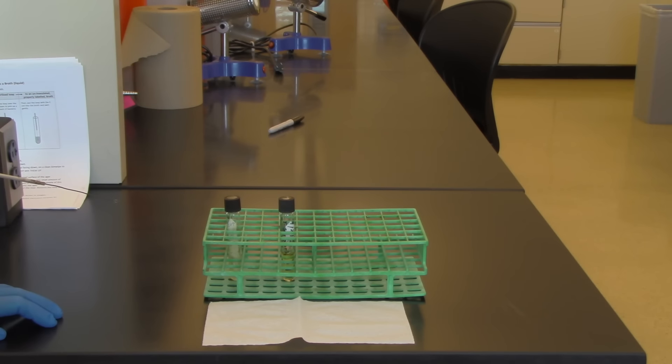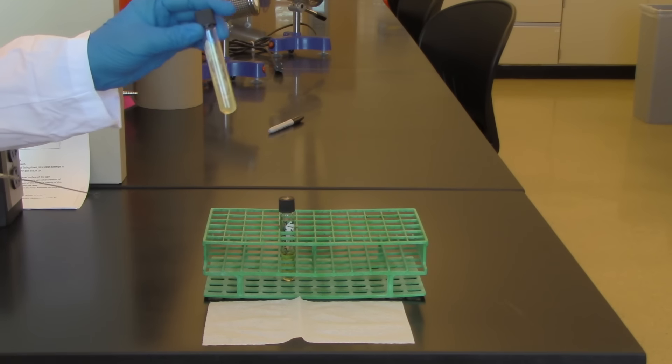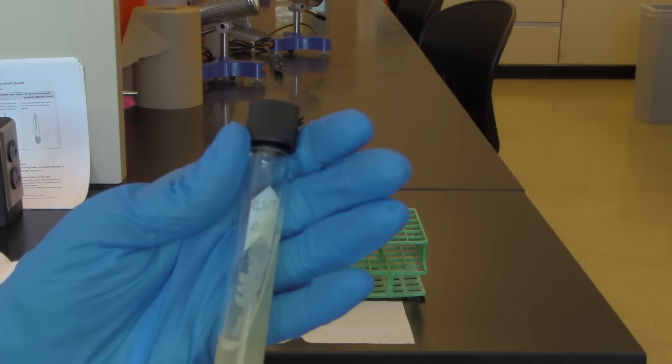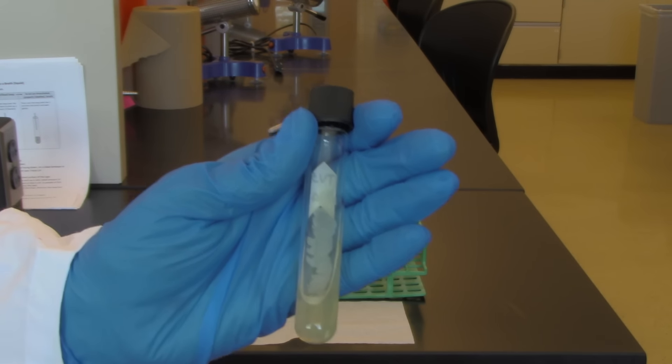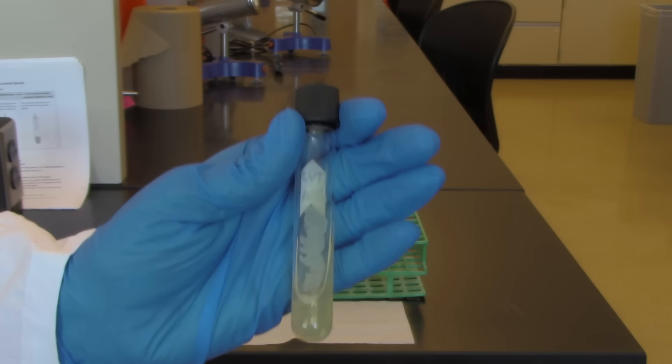This video shows how to inoculate a broth from a slant. I'm starting with a slant with organism already growing on it. If you can see here, you can see a whitish growth occurring on the surface. I want to look for that. This tube already has organism growing on the tube.